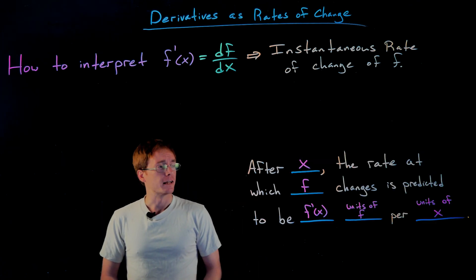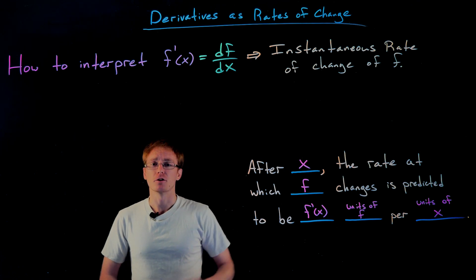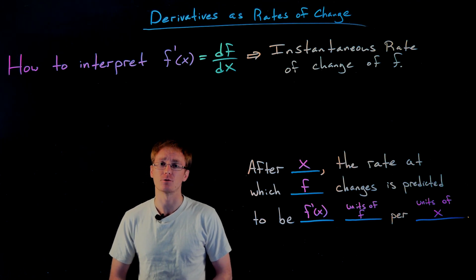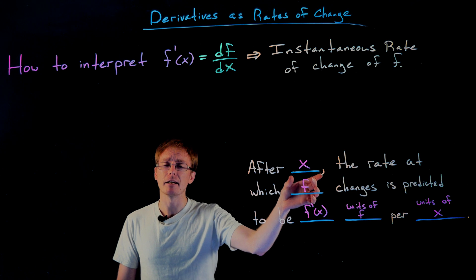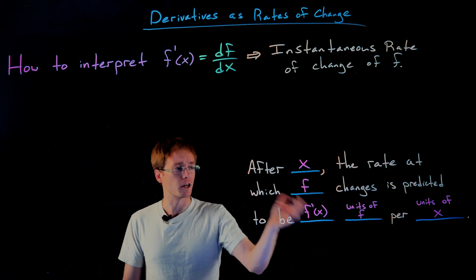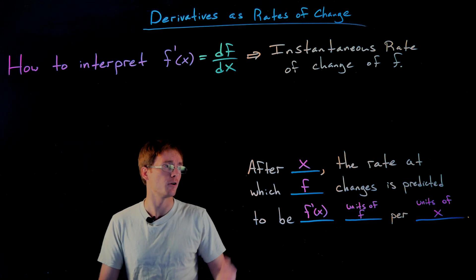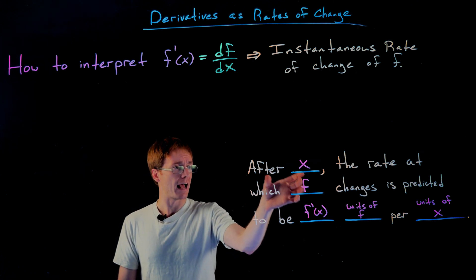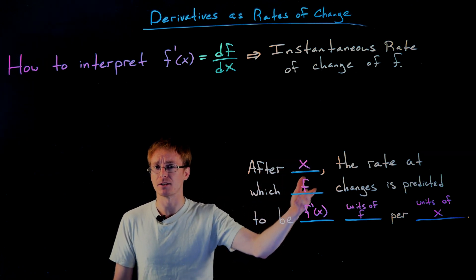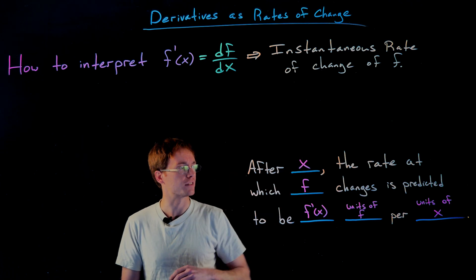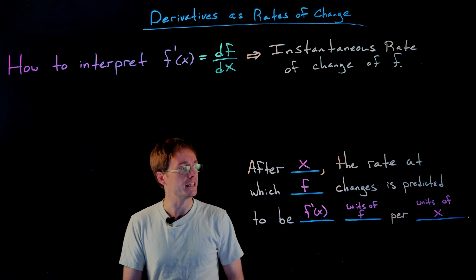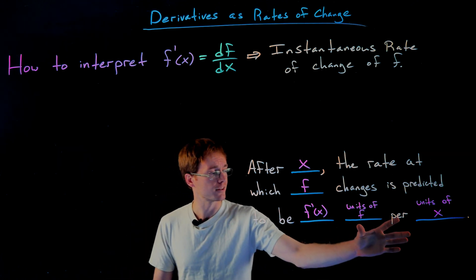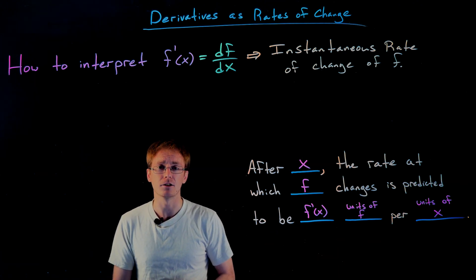This Madlib gives us a structure for building a short sentence to interpret the instantaneous rate of change of our function. The pieces in blue and pink are what we swap out once we know the context. In general, we interpret the derivative at x as: after x units of time, the rate at which our function changes is predicted to be the value of our derivative, f prime of x.